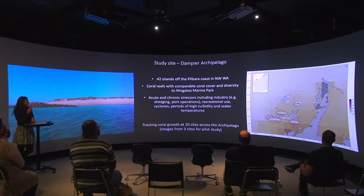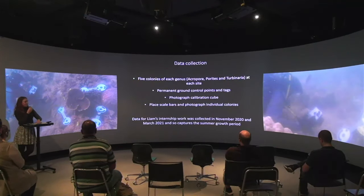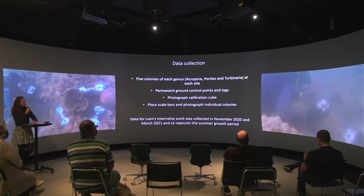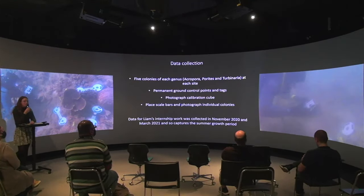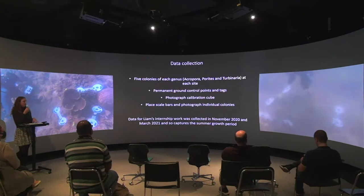As part of my project, we're tracking coral growth at 10 sites across the archipelago. For Liam's internship, he has used images from three sites, which are circled in red. When we get to the site, we set up in about a 10 by 10 metre area and work within that area, identifying five colonies of each coral genus. We've got three of the main reef-forming morphologies: Acropora, Porites and Turbinaria.